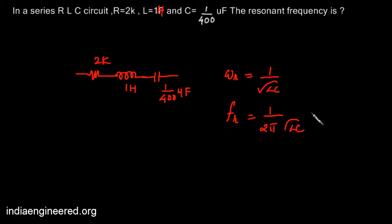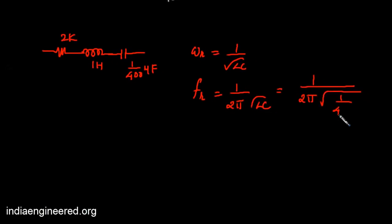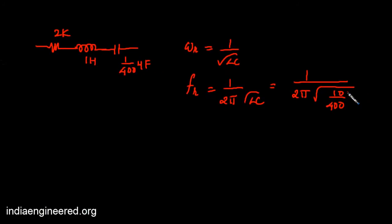By direct substitution we can find out its value as 1 by 2 pi into root of, what is L? That's 1 henry by 1 by 400 times 10 power minus 6. Its value will be 3183.09 hertz.